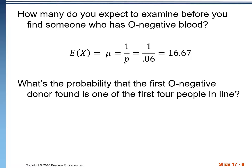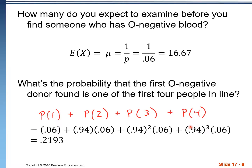What's the probability that the first O negative donor is found in one of the first four people in line? We consider each case: first person has a 6% chance. For the second person, there's a 94% chance the first wasn't O negative, then the second was. Third person means two were not O negative, then the third was. Fourth person means three were not, then the fourth was. Adding all those up gives 0.2193.